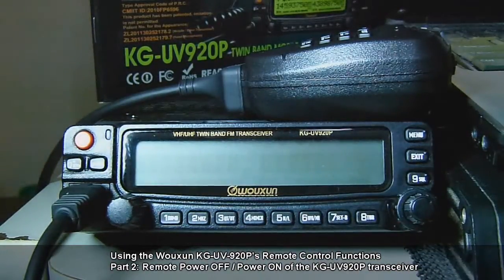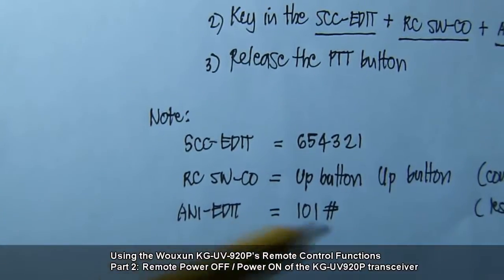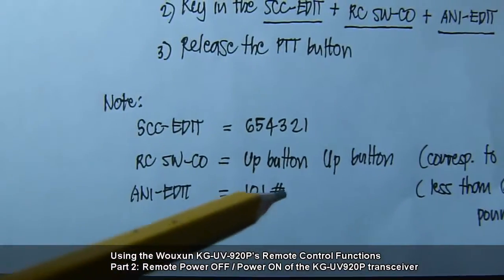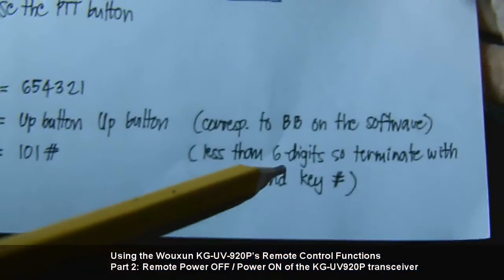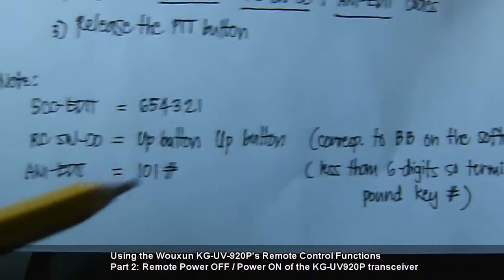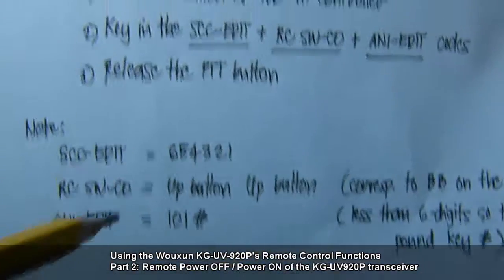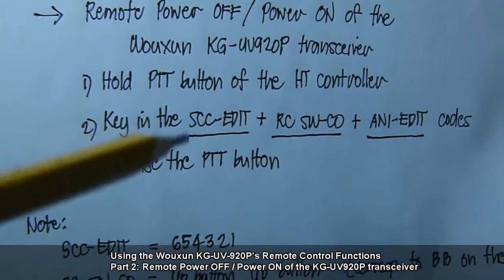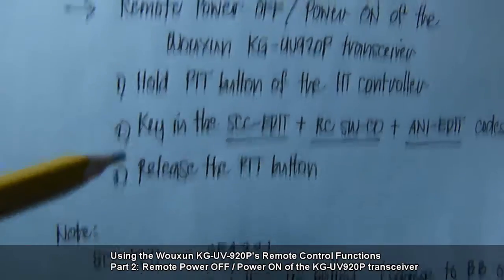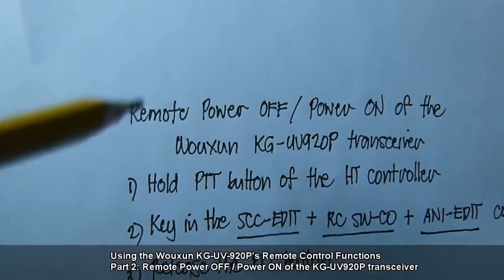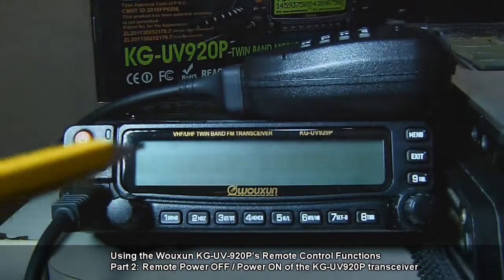For the ANI-EDIT code, we use 101, but we have to terminate it with a pound key because 101 is a three-digit code — less than six digits — so we terminate it with a pound key. So we hold PTT, key in the following codes, and release the PTT button. That's how you power off or power on the Wushun KG-UV920P transceiver.